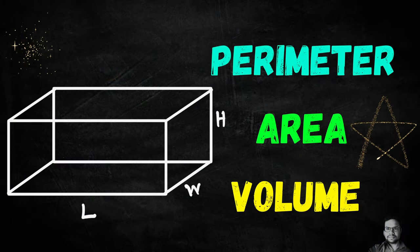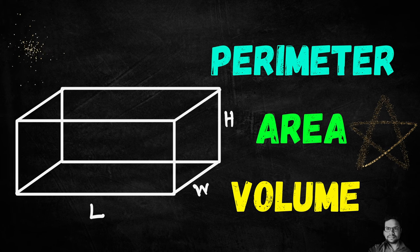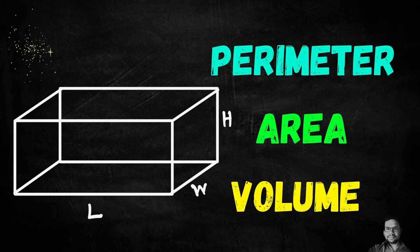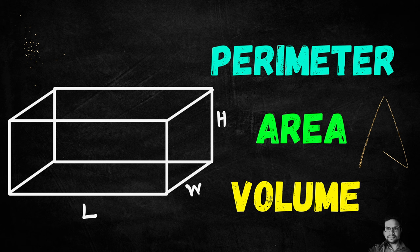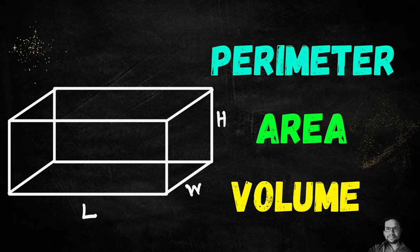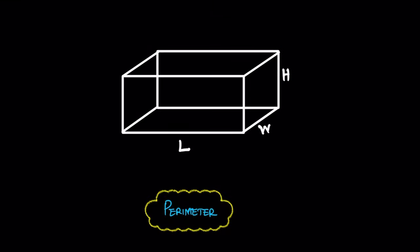Hello students, welcome to Stenis Math. Today we are going to discuss the perimeter, area, and volume of a cuboid. The other name is rectangular prism. A cuboid or rectangular prism is just like a cube, but the edges are not equal.